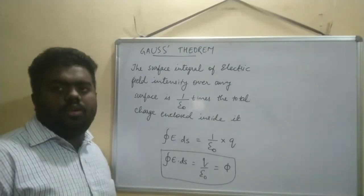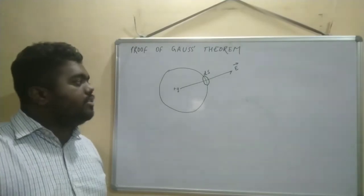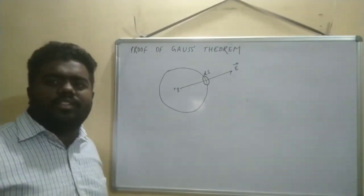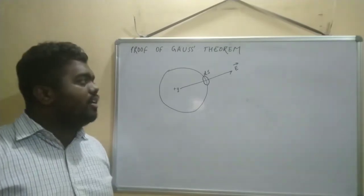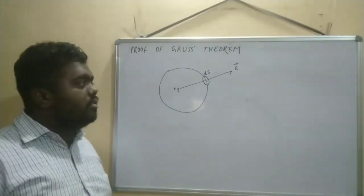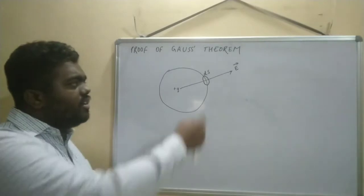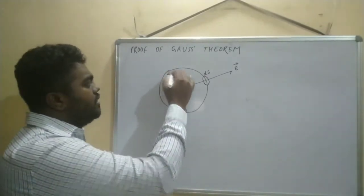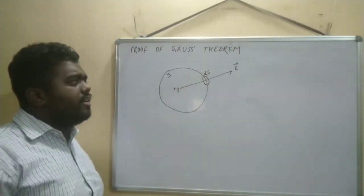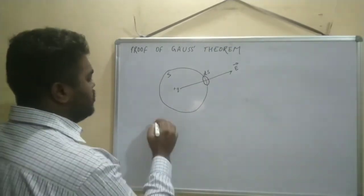Now we will prove Gauss's theorem. We are considering a spherical closed surface — we should consider a spherical closed surface for this derivation to prove it exactly. We keep a plus Q charge inside it. We consider one electric field line passing through a small closed surface dS. This is the total closed surface S, and through the small surface dS, electric field E is going out. A small amount of flux dΦ is also coming out.